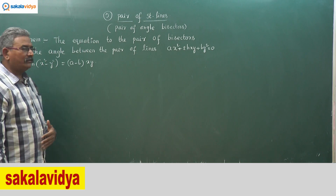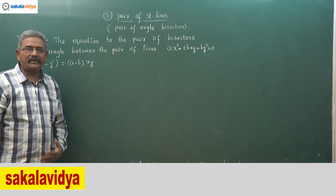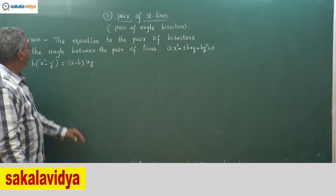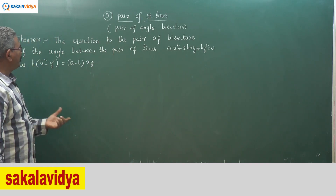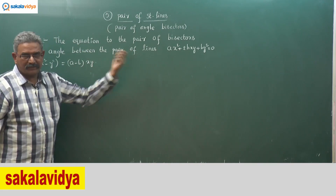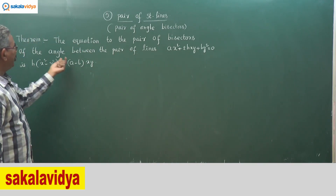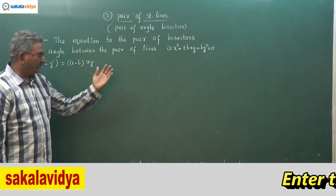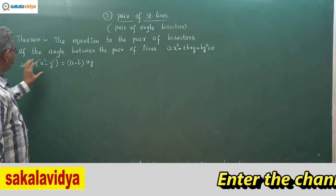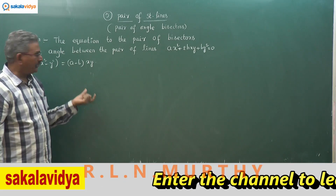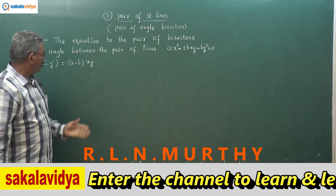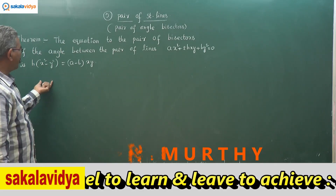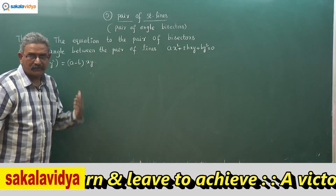Let us have a discussion on one more important theorem: the pair of angle bisector theorem. The theorem states that the equation to the pair of bisectors of the angle between the pair of lines ax² + 2hxy + by² = 0 is h(x² - y²) = (a - b)xy, or equivalently, (x² - y²)/(a - b) = xy/h.